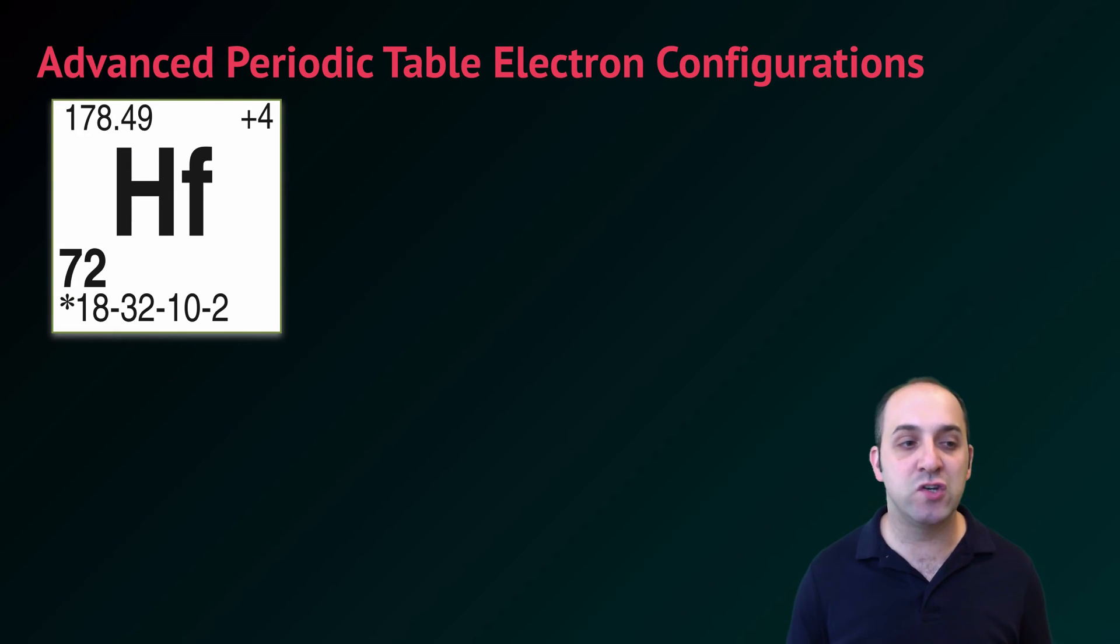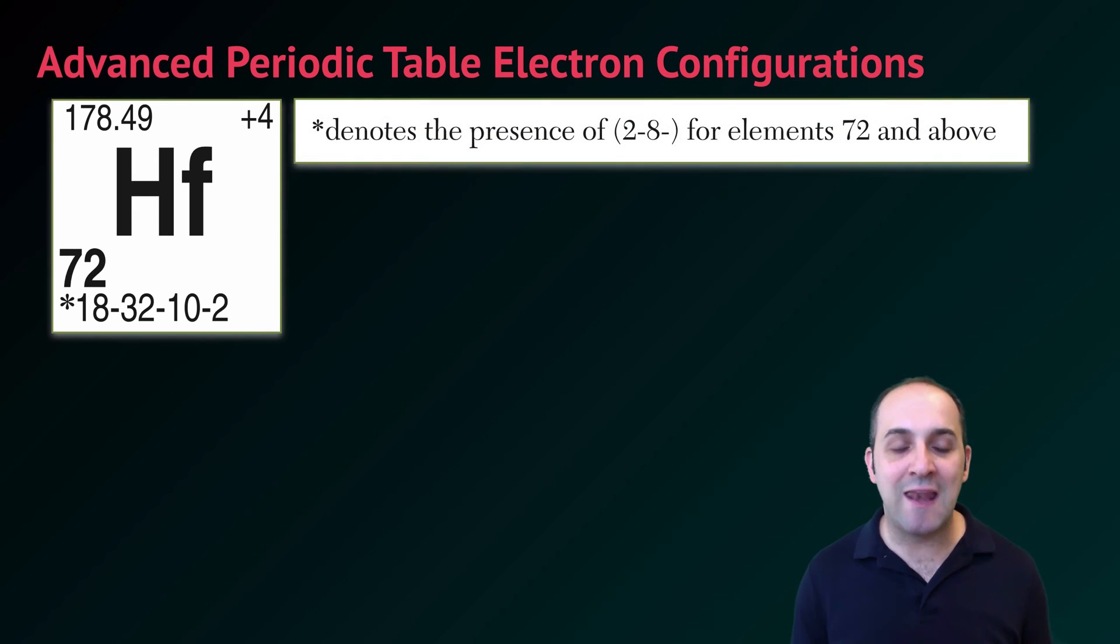If you look at hafnium's electron configuration you see an asterisk and the reason for that is because we need to go to the bottom of the table to read that the asterisk denotes the presence of 2-8- to start for any element 72 and above. It's simply a matter of running out of room. They just do not have enough room in these boxes to write the full configuration and every element 72 and above is going to start with 2-8 so they've just denoted that for every element 72 and up you're going to have 2-8 to start.